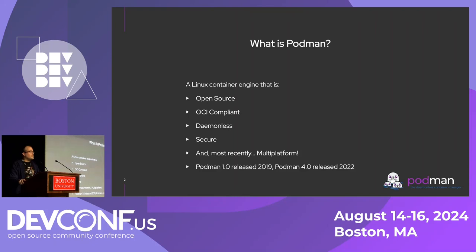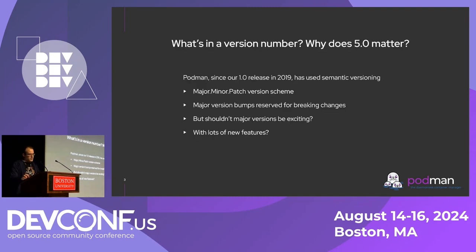A bit of a timeline on our development: Podman 1.0 was released in 2019, with development starting around late 2017. Podman 4.0 was released in 2022. Since 1.0, we have used semantic versioning — a major.minor.patch scheme. A major version bump indicates a breaking change, a minor bump means new features, and a patch version means we're just fixing bugs.